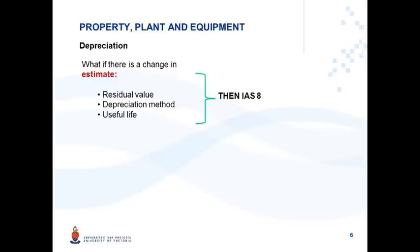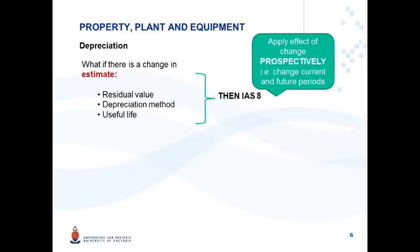What happens if there is a change? The standard says you apply IAS 8. IAS 8 says when there is a change in accounting estimate, you apply the effect of this change prospectively — that is, you change the current and future periods, as opposed to retrospective application. You do not change any previous period. You apply the effect of the change in the year in which the estimate changed and all future periods.